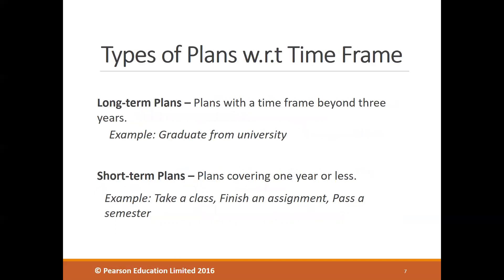Types of plans with respect to timeframe: there are two types. Long-term plans extend beyond a defined multi-year horizon — for example, graduating from university takes almost four years. Short-term plans cover one year or less. For example, taking a class is a three-hour plan, finishing an assignment may have a deadline of a week, or passing a semester spans four to five months — all of these are short-term plans because they are completed within a year or less.